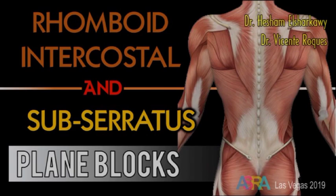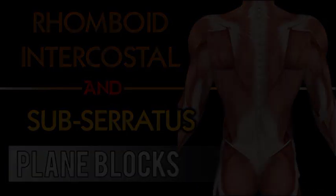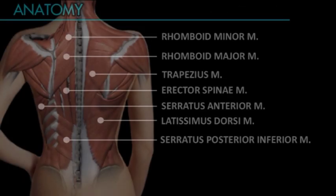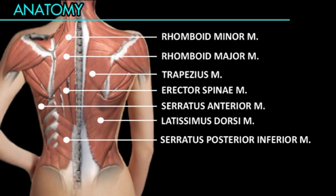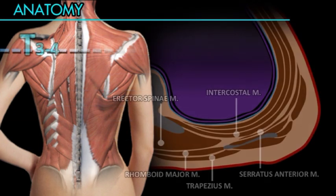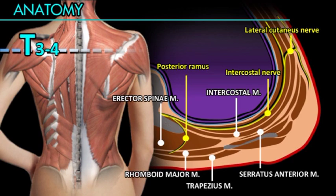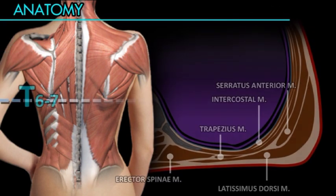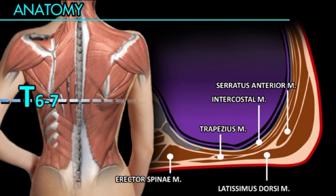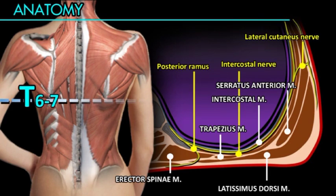The superficial muscles are trapezius and latissimus dorsi; deeper are the rhomboid and the serratus anterior muscles. The tissue plane deep to the rhomboid extends medially deep to the erector spinae and laterally deep to the serratus anterior. The tissue plane deep to the serratus extends medially deep to the erector spinae.